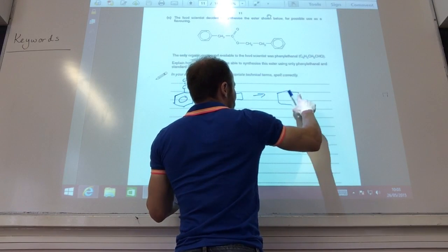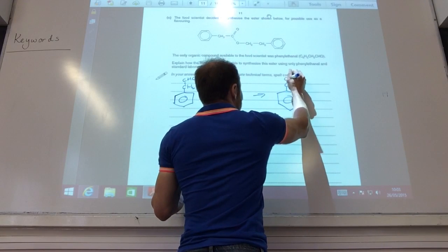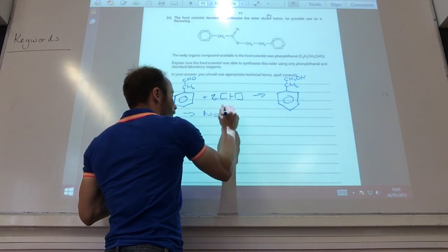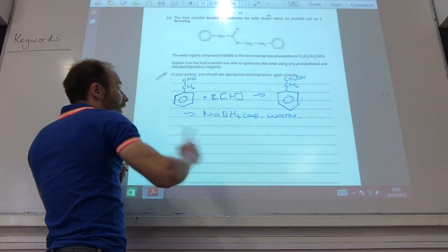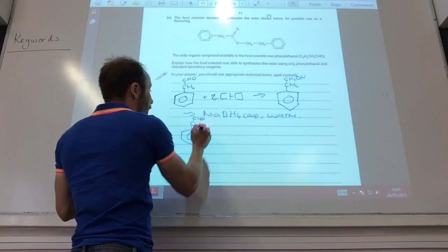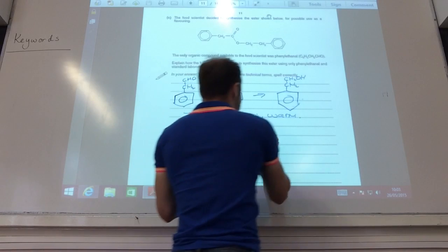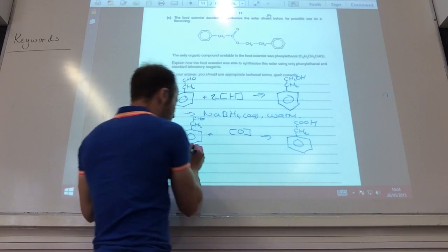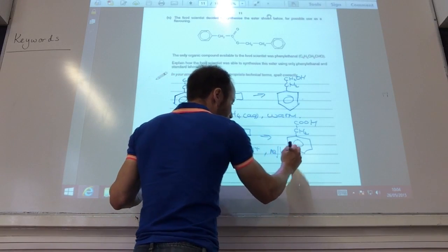That is going to give me a very dodgy benzene, like so. That's going to give me my alcohol, like so. For that one, I would use sodium borohydride, aqueous, and warm it up. That's got my alcohol. I also then take my aldehyde, but now I'm going to oxidize it to the carboxylic acid, like so. And for that I would use potassium dichromate in acid, and I would reflux.